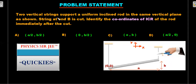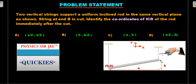Here's the problem statement: two vertical strings support a uniform inclined rod in the same vertical plane as shown. The string at end B is cut. Identify the coordinates of the ICR of the rod immediately after the cut. The left end, end A, is the origin; the rightward axis is the x-axis and vertically upward is the y-axis. The end coordinates of the rod are (a, b), and you are supposed to give the location of ICR in terms of a and b. Four possible answer coordinates are provided.